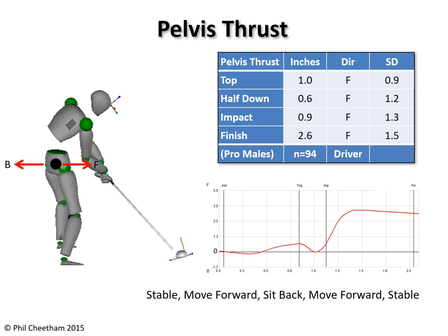After impact, the pelvis thrusts more toward the tee since the ball is already gone by now, and then stabilizes into finish. The typical shape of the thrust curve is a double hump, with the first hump at the top and the second hump after impact.